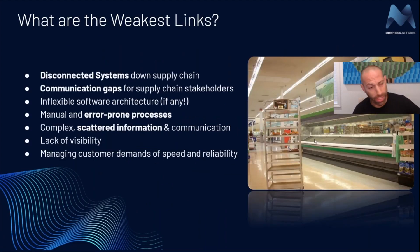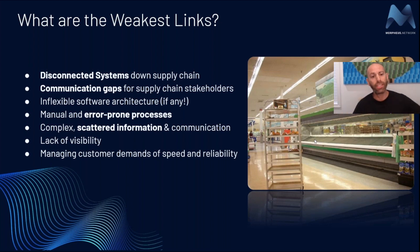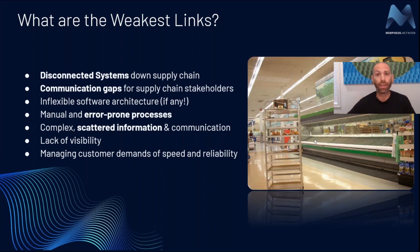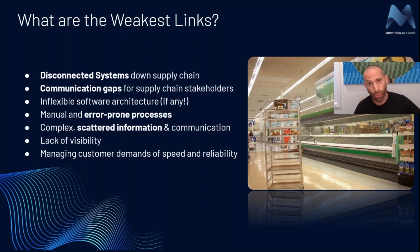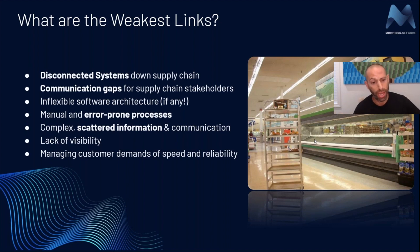Let's look at the problems that actual businesses are having. We have disconnected systems down the supply chain — IT systems that don't speak to each other, different ERP systems, a TMS that doesn't connect to your ERP. There are communication gaps between stakeholders: business brokers, freight forwarders, shipping companies, buyers and sellers — all these different people have to communicate with each other. There's also inflexible software architecture and IT systems that don't fit your current stack, plus a lot of manual processes which cause errors all the way down the supply chain.